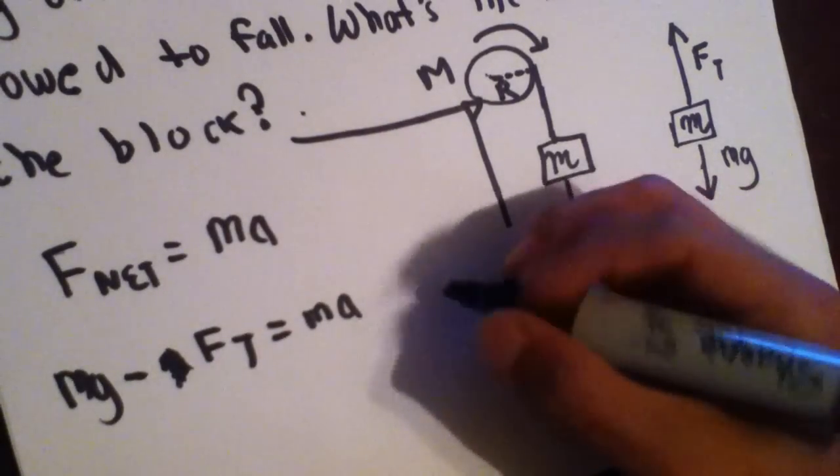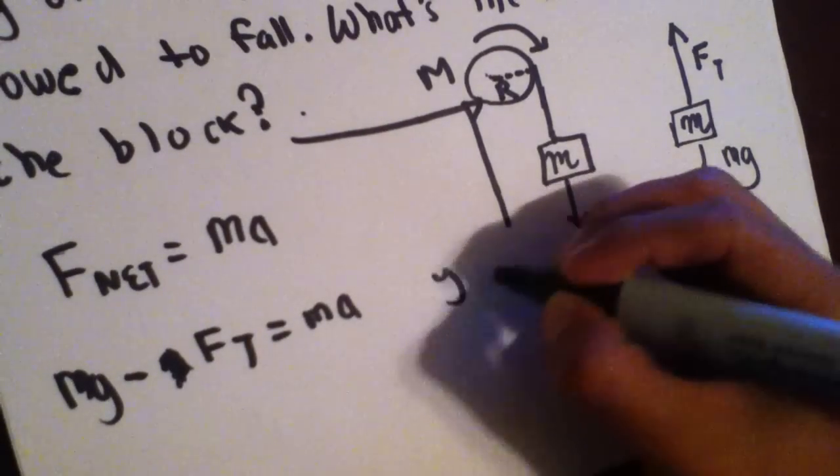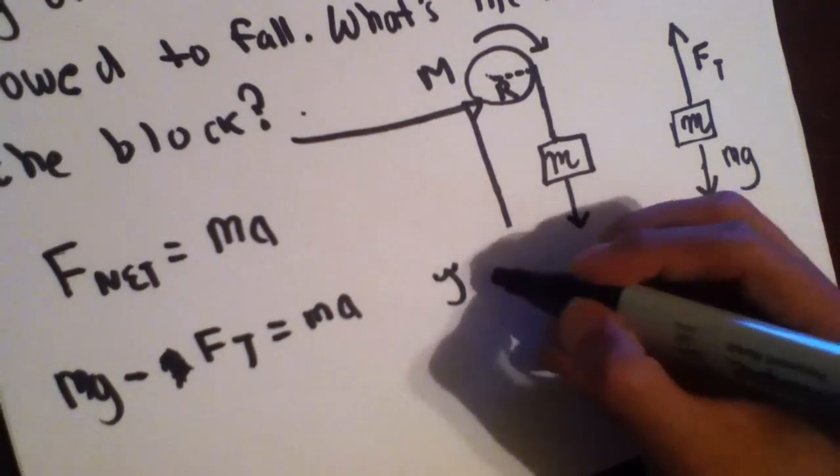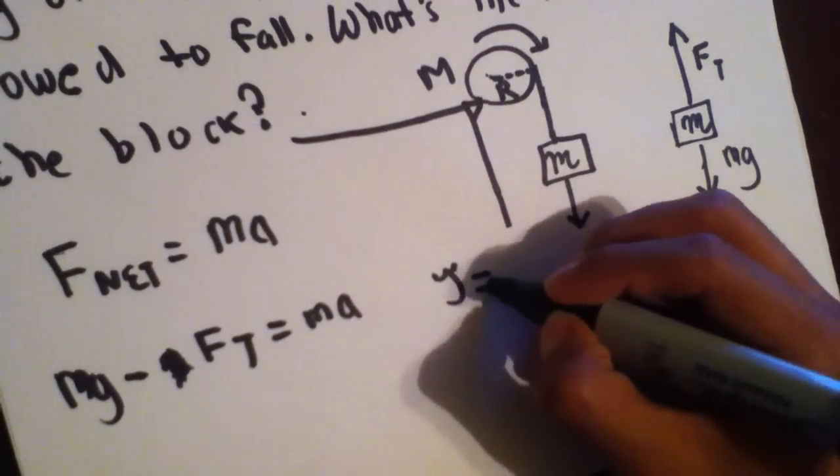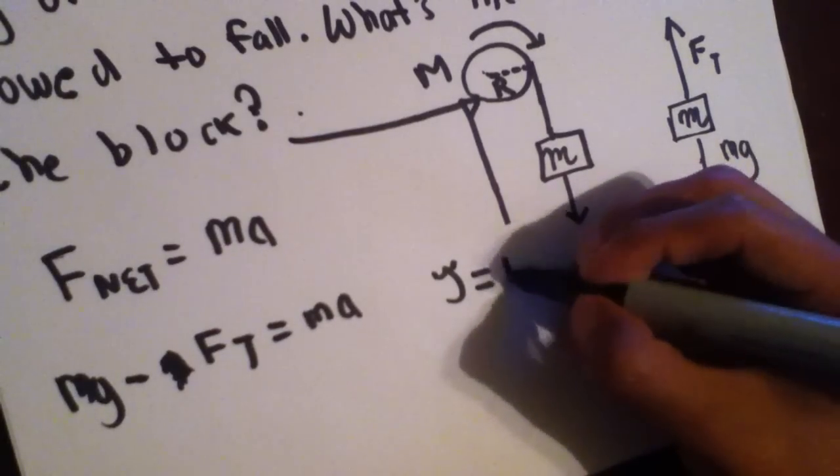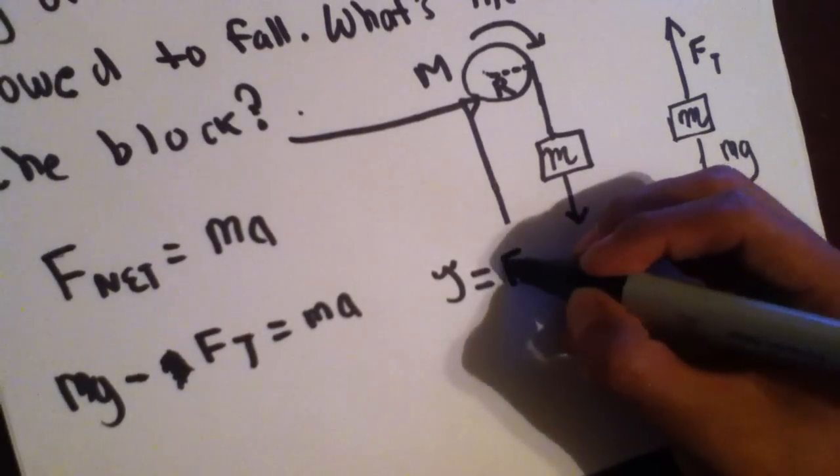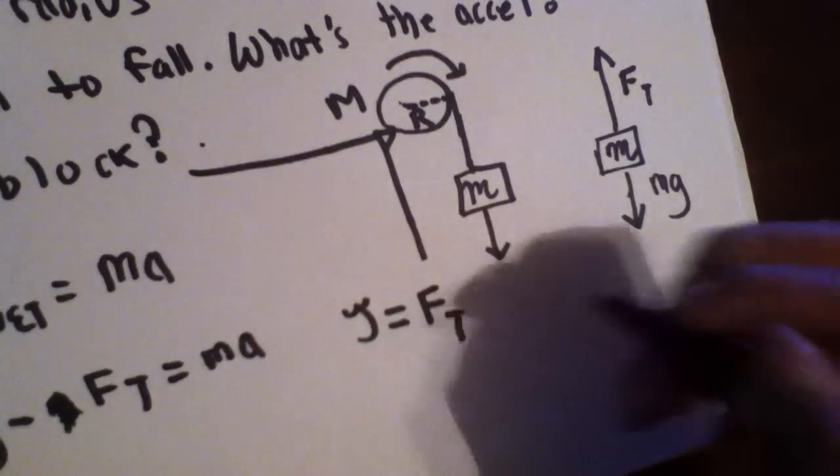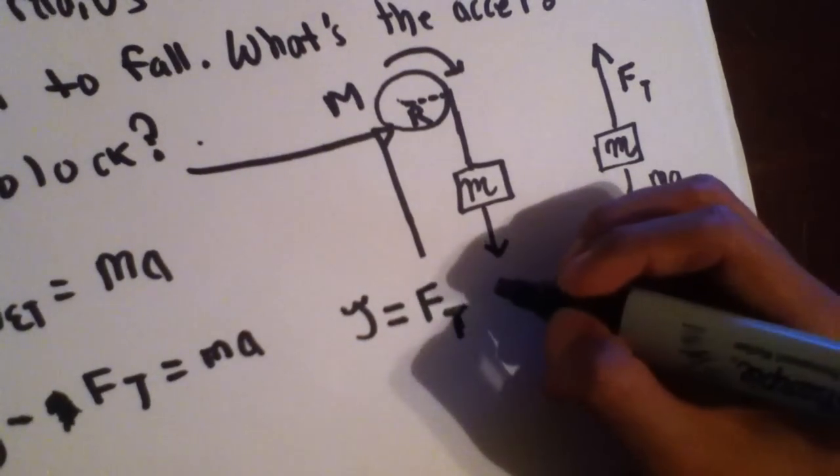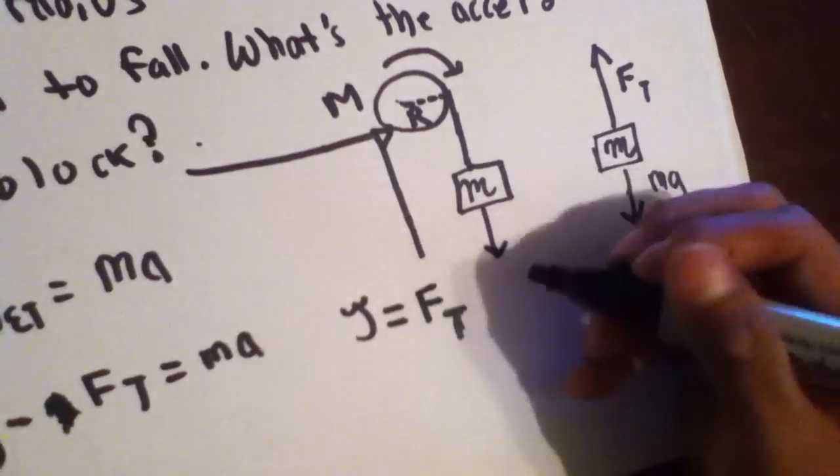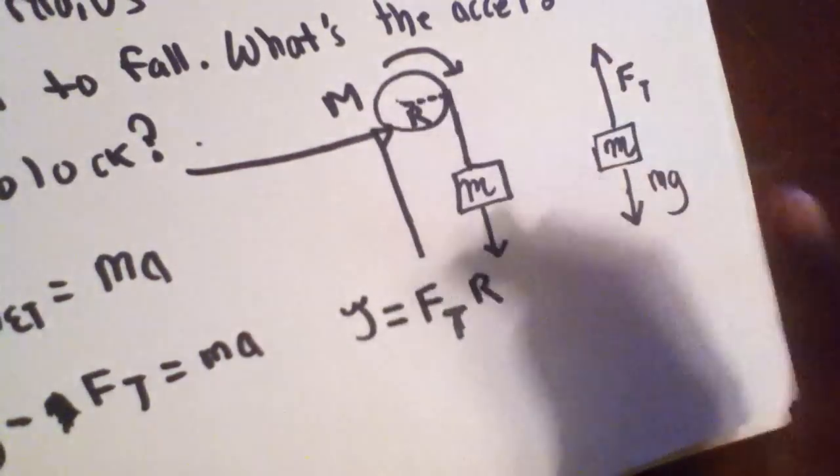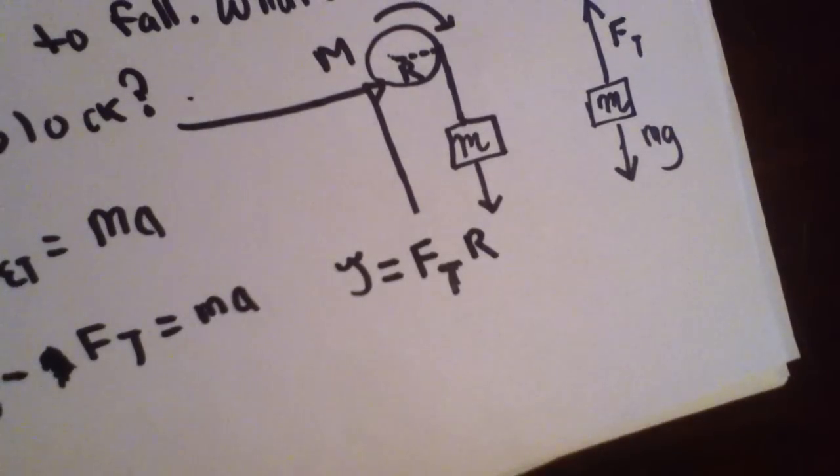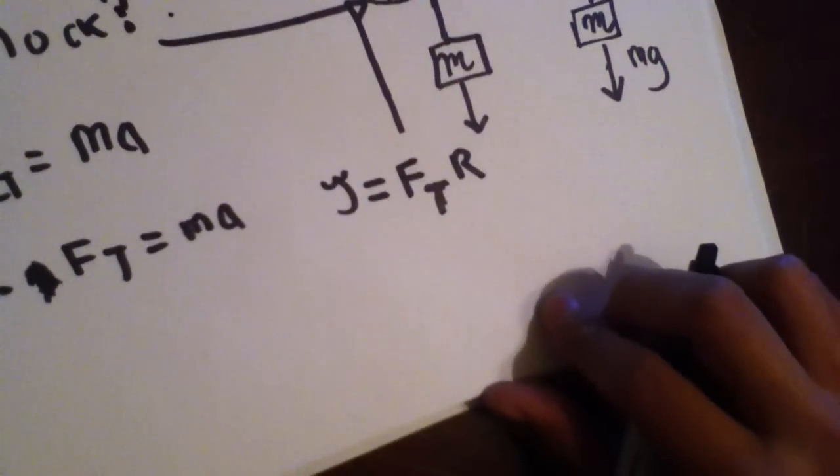Because we know that the torque, that's supposed to be a tau, the Greek letter. I kind of drew a little weird, but well. So tau equals, or the torque is the force of the tension, which is this component right here of the block, times the radius, which is R. Remember, it's just terms. There's no actual values.